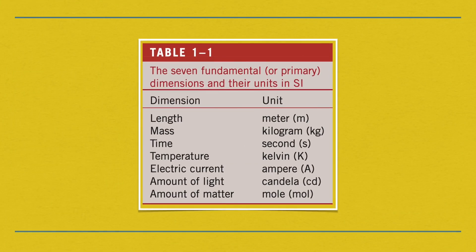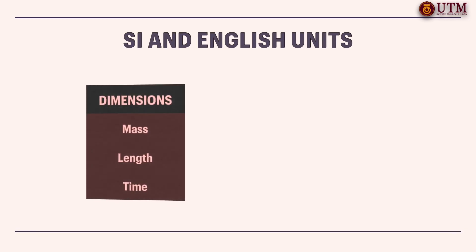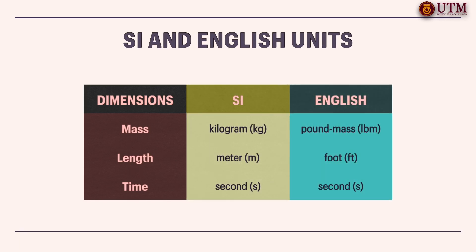As shown in table 1.1, the 7 fundamental dimensions and their units are presented. In SI, the units of mass, length and time are the kilogram, meter and second respectively. The respective units in the English system are the pound mass, foot and second.